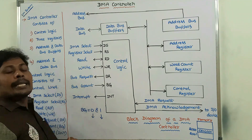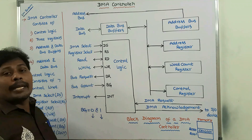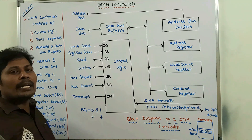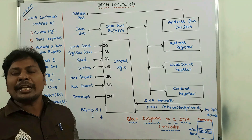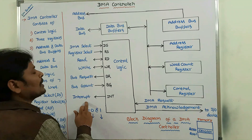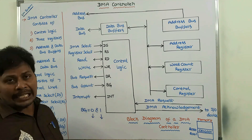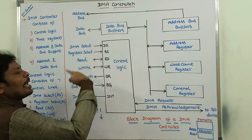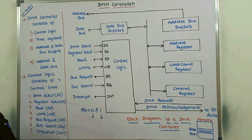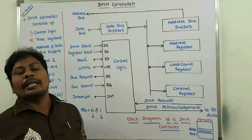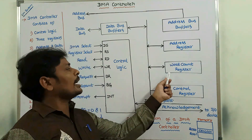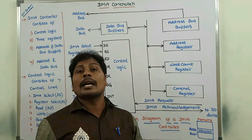The last control line is the interrupt control line. It is used to specify the occurrence of an interrupt in the DMA controller. If any interrupt occurs in the DMA controller, it is specified by the interrupt control line, represented by INT. After the control logic, the DMA controller consists of three different registers: address register, word count register, and control register.